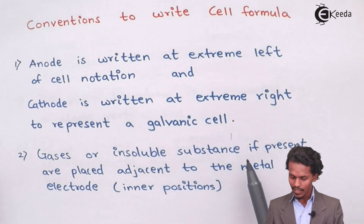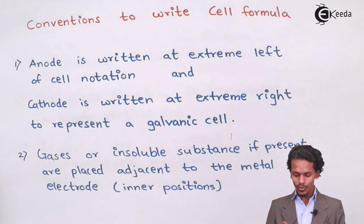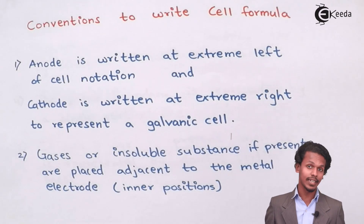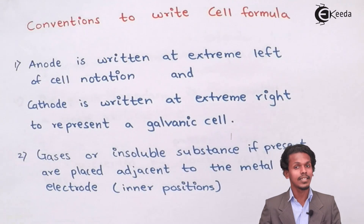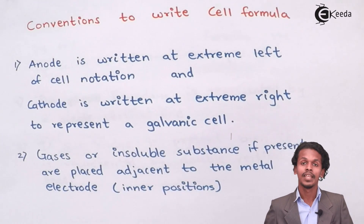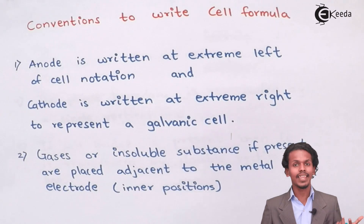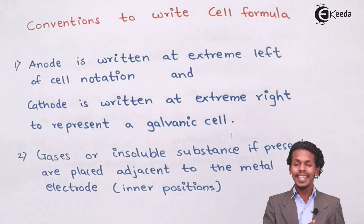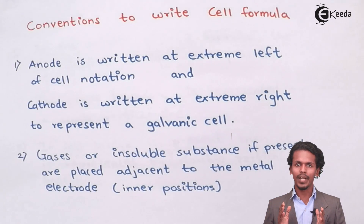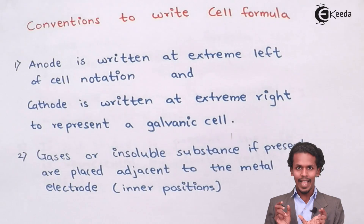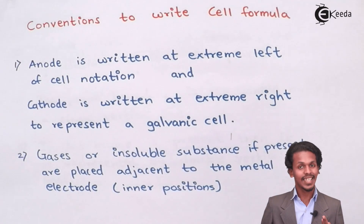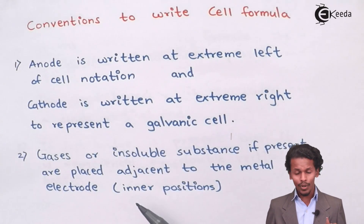If gases or insoluble substances are present, they are placed adjacent to the metal electrode — basically in an inner position relative to the metal electrode. For example, if I have taken silver as the anode and there is an insoluble substance like AgCl, I will write it inner to the anode, between the anode (Ag) and the cathode (e.g., Mg). I will explain this further with an example later.